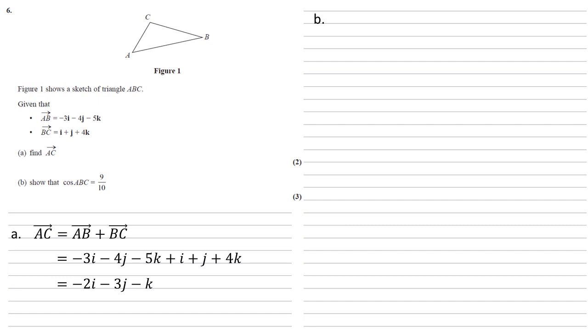For part B, we need to show that cos ABC equals 9 tenths. We're going to use the cosine rule here, so we need the lengths of the individual sides.